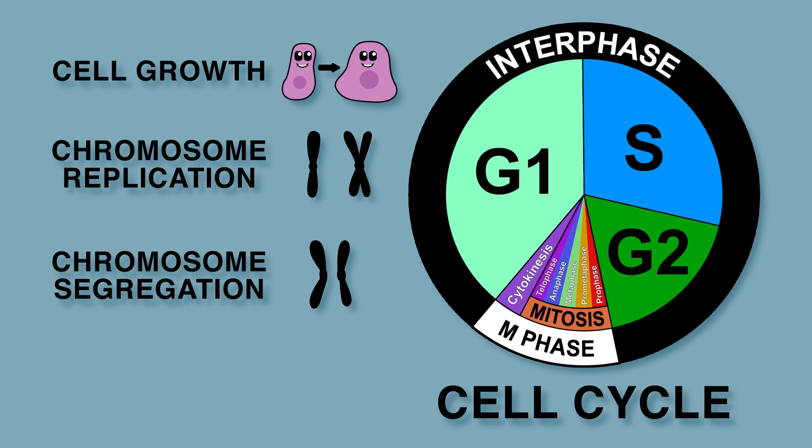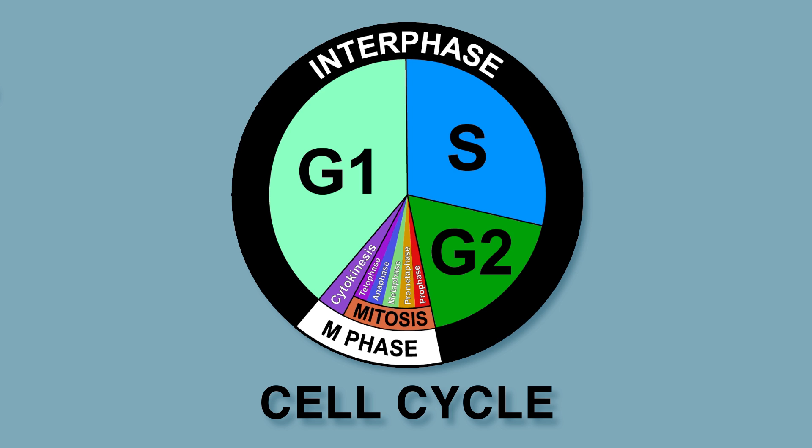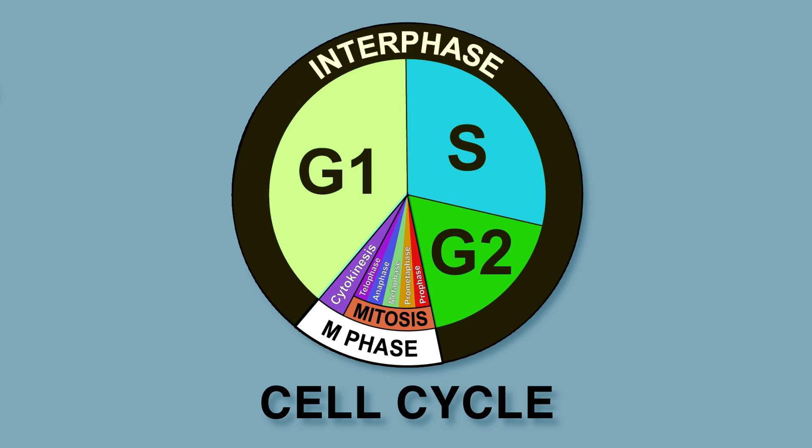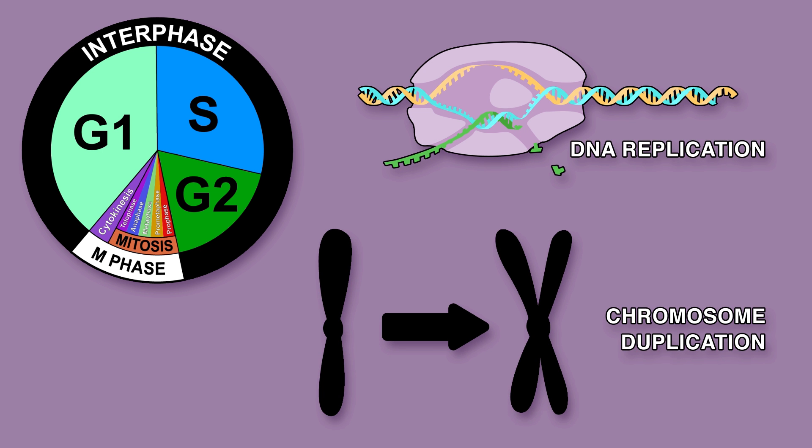The cell cycle involves cell growth and chromosome replication, chromosome segregation and cell division. Together the first three phases are called interphase. DNA and chromosomes duplicate during S phase.